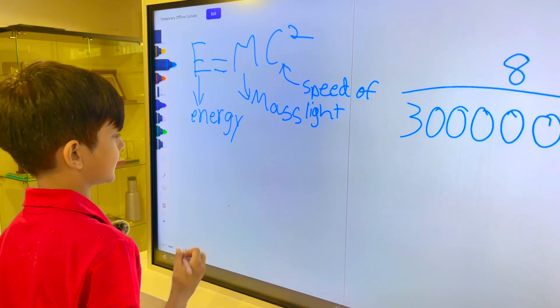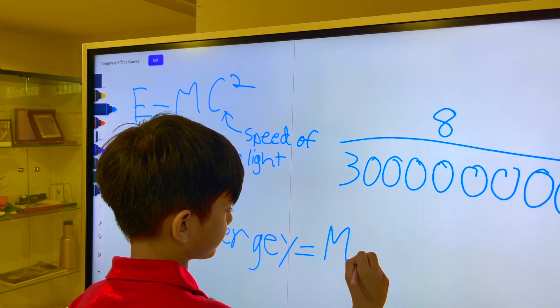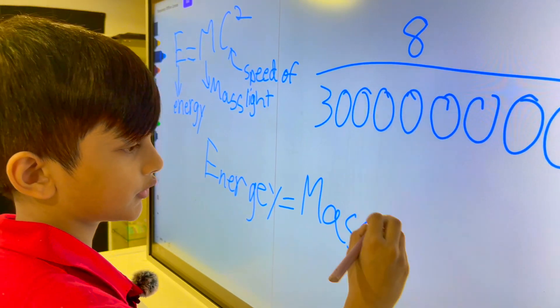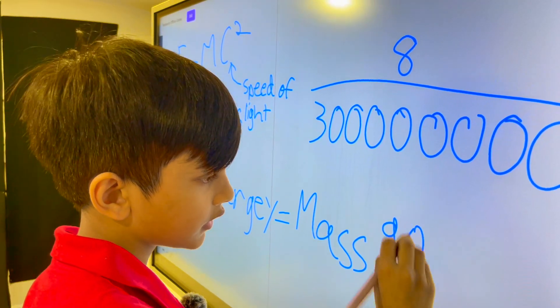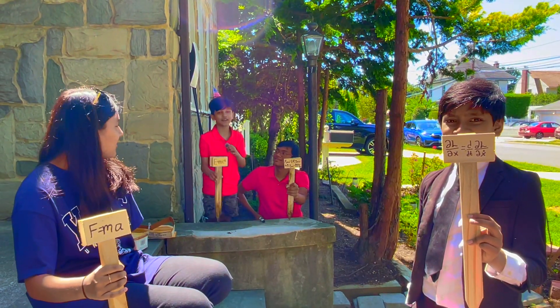Now Einstein said energy equal to mass, and mass is going to multiply to 90 quadrillion. If you like my presentation, vote for me.